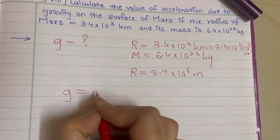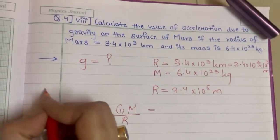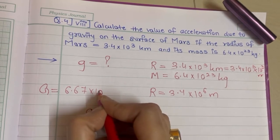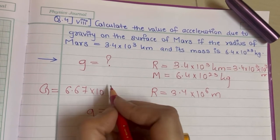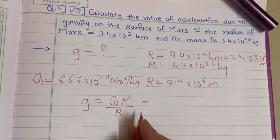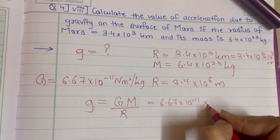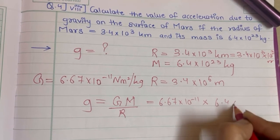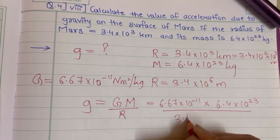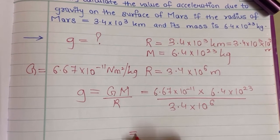The formula for acceleration due to gravity is g = GM/R, where G is the gravitational constant, 6.67 × 10⁻¹¹ Nm²/kg. Substituting: g = (6.67 × 10⁻¹¹ × 6.4 × 10²³) / (3.4 × 10⁶).